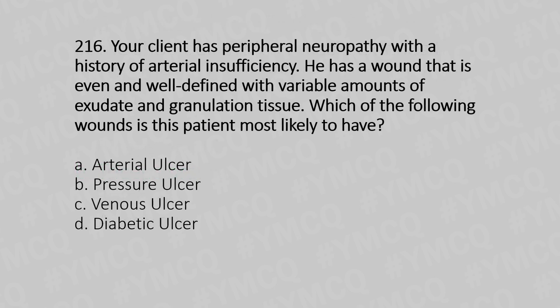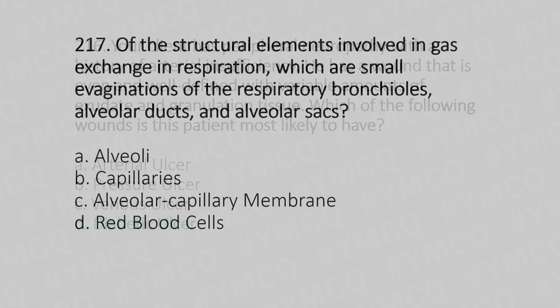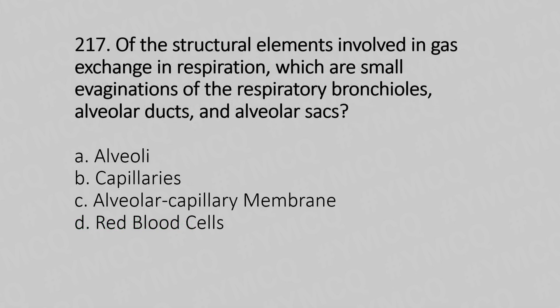Question 216: Your client has peripheral neuropathy with a history of arterial insufficiency. He has a wound that is even and well defined with a variable amount of exudate and granulation tissue. Which of the following is this patient most likely to have? Option A: Arterial ulcer. Option B: Pressure ulcer. Option C: Venous ulcer. Option D: Diabetic ulcer. The answer is Option D: Diabetic ulcer.